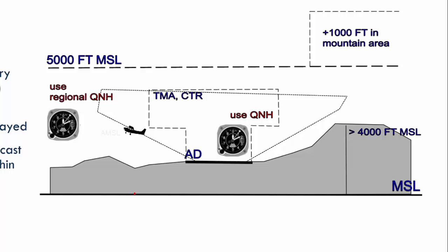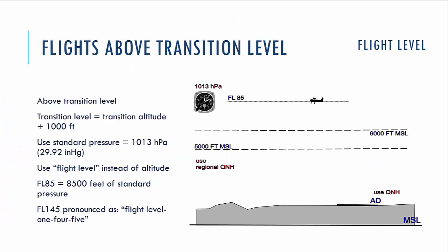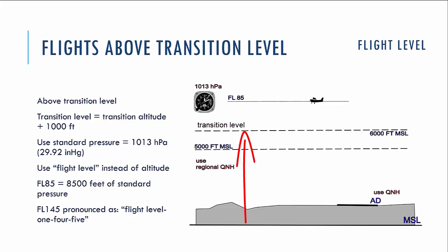When flying below the transition altitude, we are using and reporting the altitude in feet above mean sea level. Now let's imagine we are flying above the transition level. Earlier we talked about flying under the transition altitude, and between the transition level and transition altitude there is a transition layer with a thickness of 1,000 feet. In this example, with a standard transition altitude of 5,000 feet mean sea level, the transition level will be placed at 6,000 feet mean sea level. For the United States it will be the same, but the transition altitude will be 18,000 feet.